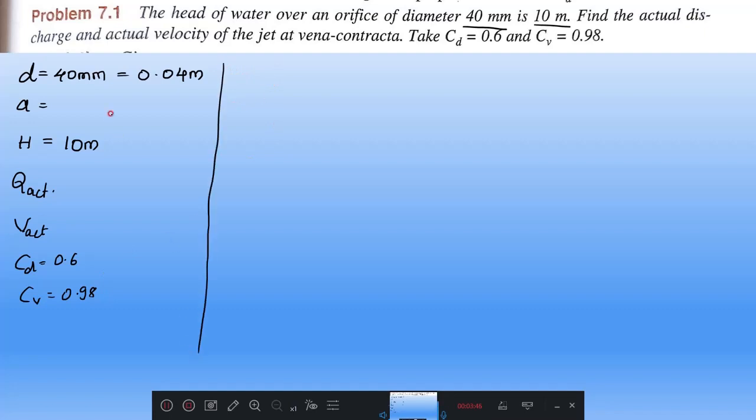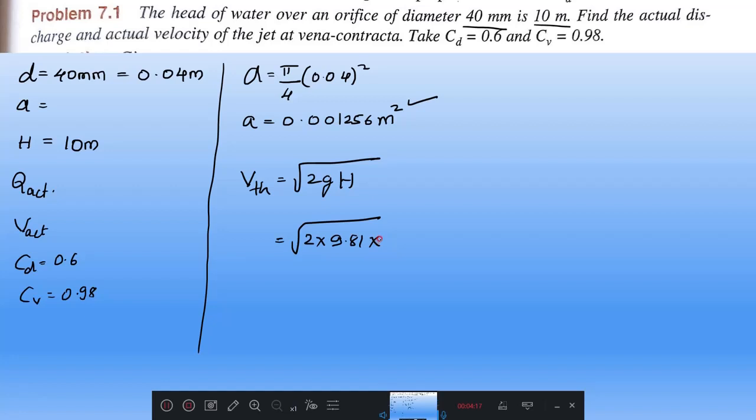The problem is very easy. First, we will find out this area. Area equals π/4 into 0.04 squared. This will be 0.001256 meter squared. Now we got the area. Then V theoretical equals root 2gH, then square root of 2 into 9.81 into 10 meter. If you calculate this, you get 14.00 meter per second.